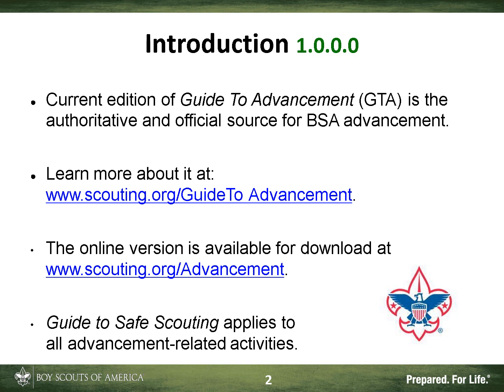Let's talk about where you can get more information. You can learn more about boards of review at the Guide to Advancement, which is your official, definitive source for policies and procedures in the BSA related to advancement of all programs. In our slides, you will see a green number at the top — for example, 1.0.0.0 — indicating the chapter and section where we are getting the policy or procedure being discussed. It's available online, as a downloadable PDF, and as a hard copy at the Scout store for around $10.